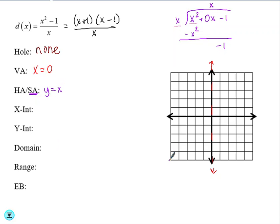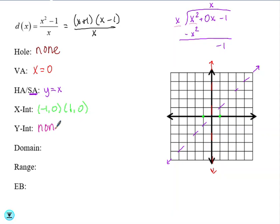So if we graph that, that is this diagonal line across the graph. Our x-intercept comes from setting the numerator equal to 0 and setting each factor equal to 0, giving us (-1, 0) and (1, 0) as our x-intercepts. The y-intercept happens when you plug in 0 for x — doing that will make us divide by 0, so there is no y-intercept.